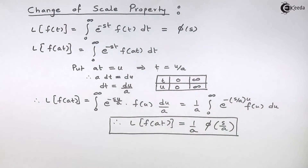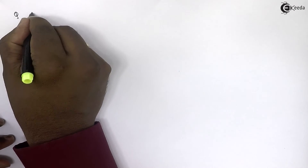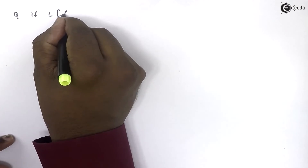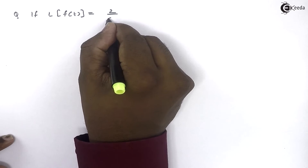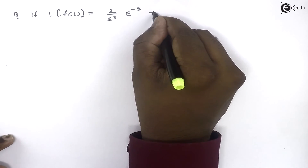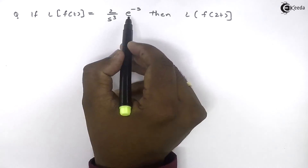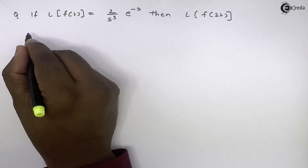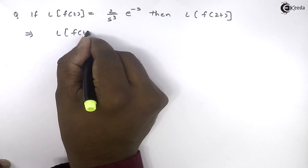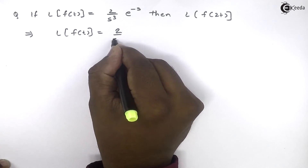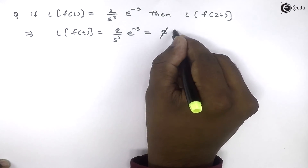So this is the change of scale property. Using this formula you can solve multiple problems in Laplace transform. Let's take one example: if the Laplace transform of f(t) is equal to 2 upon s cubed times e raised to minus s, then what is the Laplace transform of f(2t)? Here the Laplace transform of f(t) is already given, so we consider it as phi of s — that is, phi of s equals 2 by s cubed times e raised to minus s.